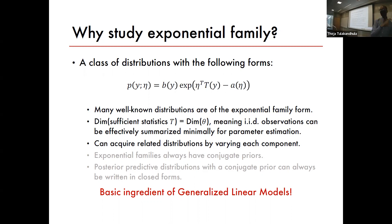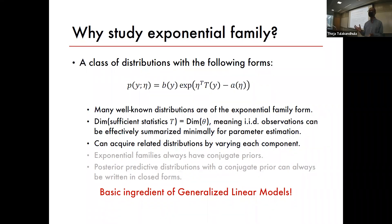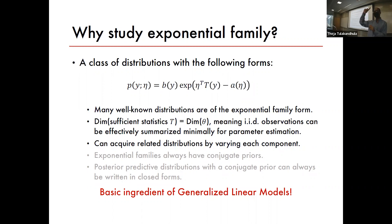A bunch of distributions we are aware of — like normal distribution, Bernoulli, or even binomial — all belong to the exponential family. If you look at Wikipedia's entry for exponential family, you'll see a table with 30 different distributions. That gives you a lot of flexibility. For example, if you look at a histogram of the target variable in your data, it may not look normal — sales data certainly won't be negative, and counts may have an exponentially decaying histogram.